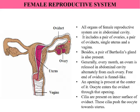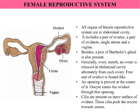The female gamete — oocyte or ovum — is immotile; it is not capable of moving on its own. However, small cilia or hair-like structures are present inside the oviducts, and these cilia keep the egg moving. The oocyte enters the oviduct through the central opening, and the cilia on the inner surface push the oocyte towards the uterus, where it finally arrives.